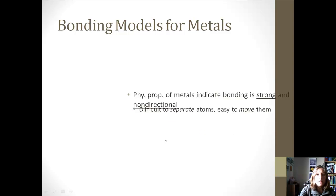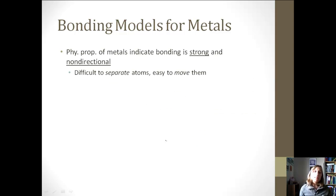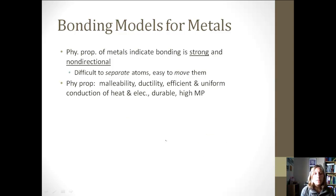So let's talk about some bonding models for metals. The physical properties of metals indicate that the bonding is very strong, but that it's non-directional, because it's very difficult to separate the atoms, but it's really easy to move them as long as they are still connected. So if you think about some of the properties of metals, they're malleable, ductile, so we can move them really easily, but they're hard to separate. They have an efficient and uniform conduction of heat and electricity. They're also durable, but they have a high melting point, and so that relates to their difficulty to separate.